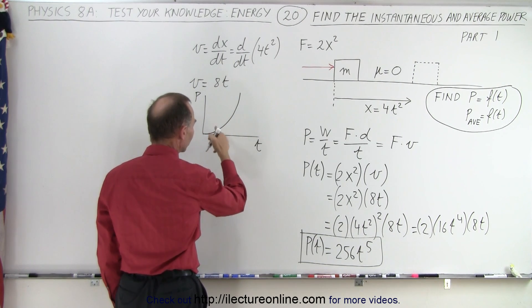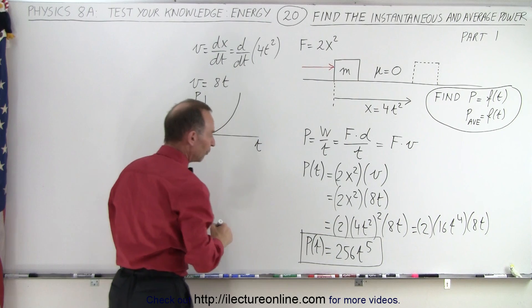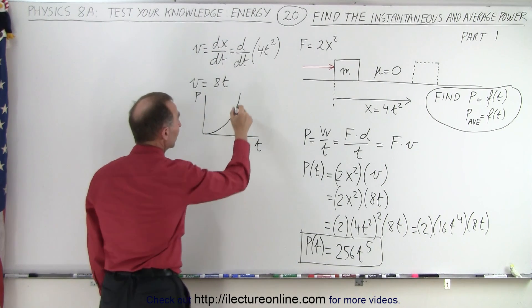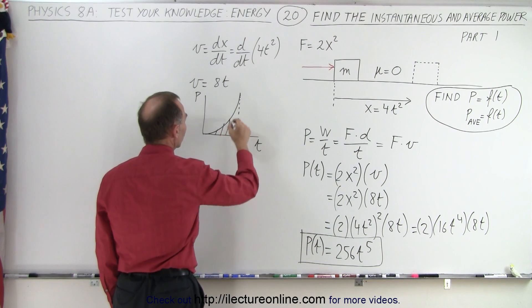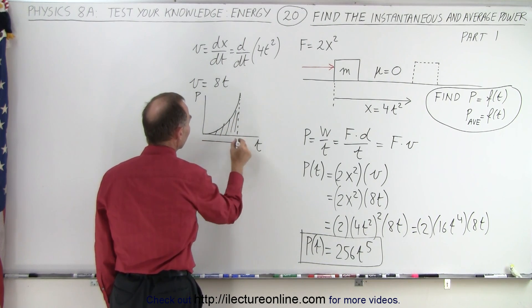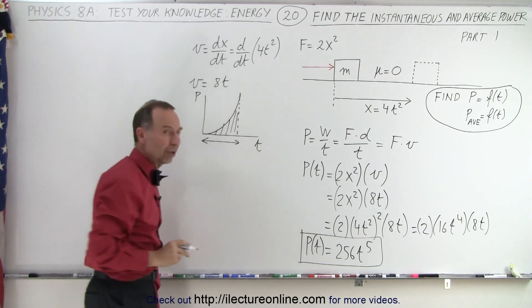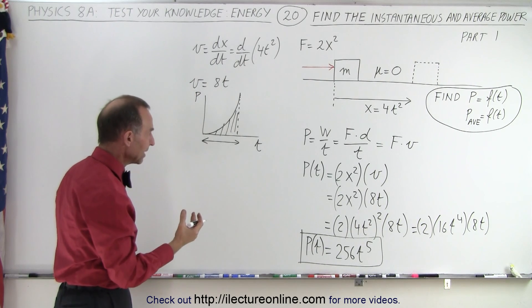Power as a function of time looks something like this. And of course, that would be as time goes to 1 second, 2 seconds, 3 seconds, and so forth. So to find the average power, what we could do is we can calculate the area underneath the curve and then divide that by the width of that curve. That's how we find the average power.